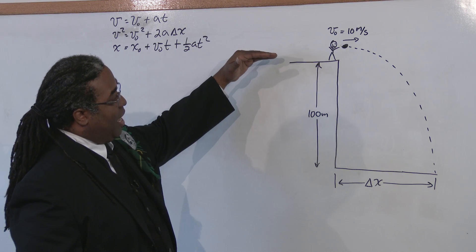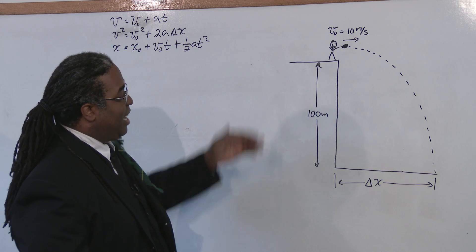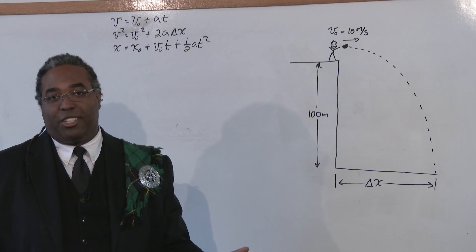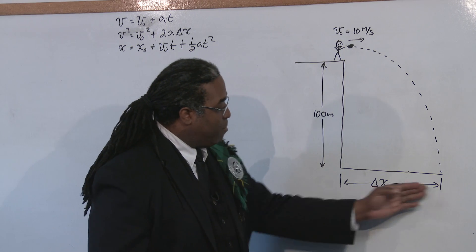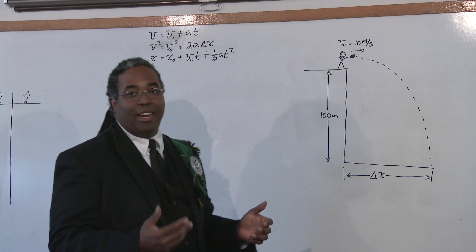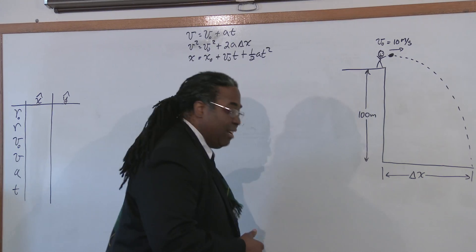This horizontal speed of the object is 10 meters per second and it falls a distance of 100 meters. So the question is asking, how far from the base of the cliff does the ball land? Well, let's go over to our table and write down our given information.